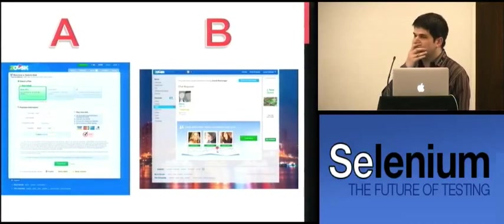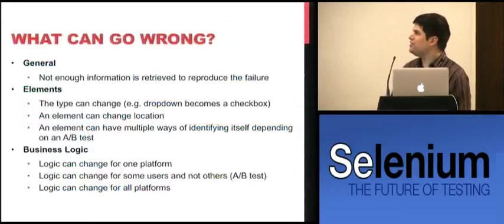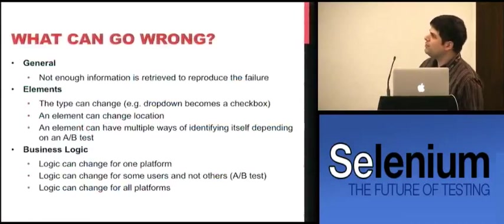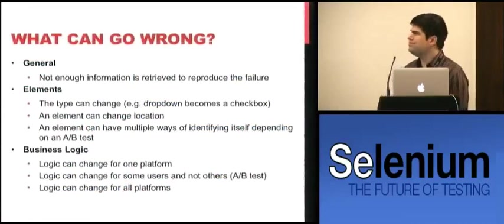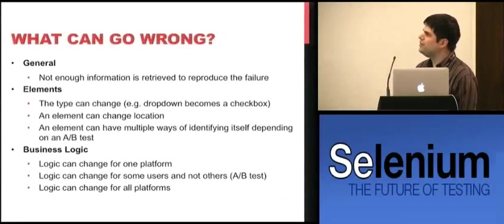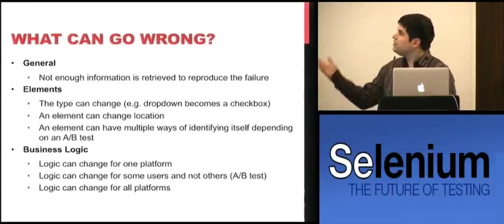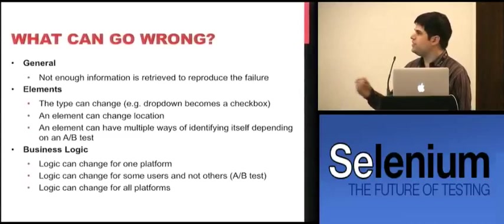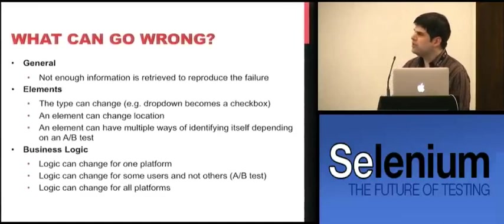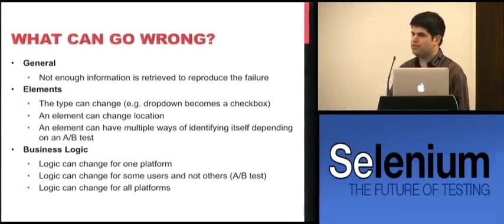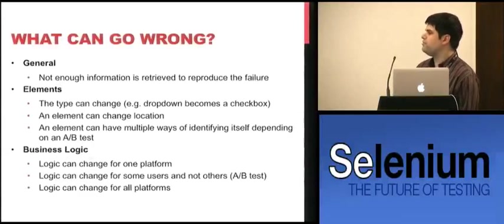Our automation will work no matter what is thrown at it. The biggest problem with tests is frequently there's not enough information to reproduce a failure. What page did we see? Elements can move around because we're frequently tweaking UI. Maybe a drop-down becomes a checkbox because it confused people. An element can have multiple ways of identifying itself — in one it's a drop-down, in another it's a checkbox or a form. And business logic frequently changes, sometimes for one platform, sometimes for all, sometimes for A's and B's.